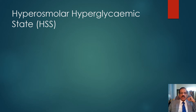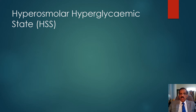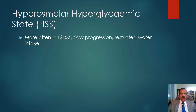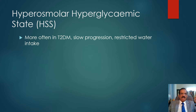I will be discussing some important features, comparing HHS with DKA and highlighting differences. HHS is more often seen in type 2 diabetes — DKA is typically seen in type 1, only very occasionally in type 2 — whereas hyperosmolar hyperglycemic state is more common in type 2 diabetes.